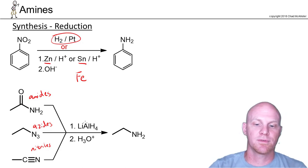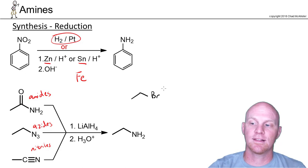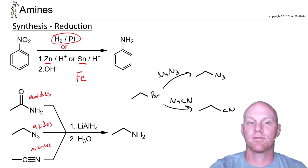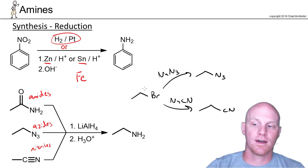I want to point out the difference between azides and nitriles: you can make both by SN2. If I had this alkyl halide, I could add NaN3, turning it into the azide with the same number of carbons. But if I added NaCN, I could turn it into the nitrile—notice it now would have three carbons instead of two.